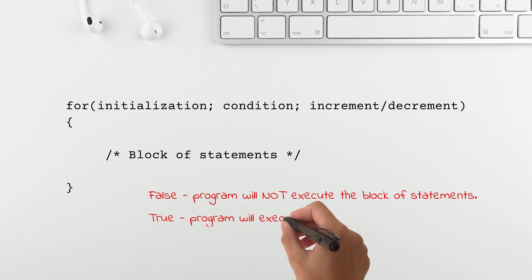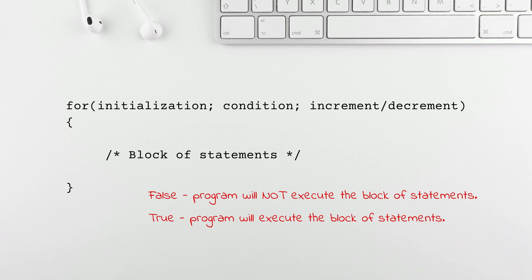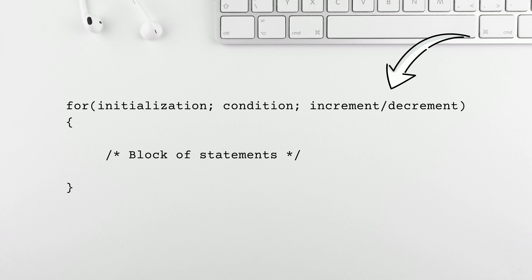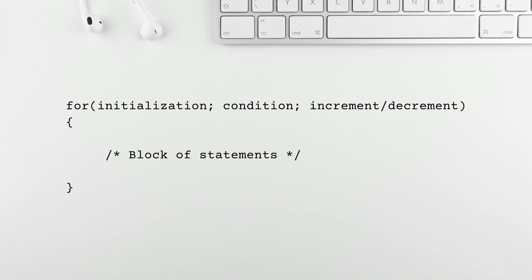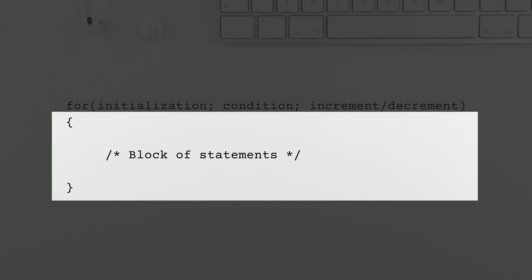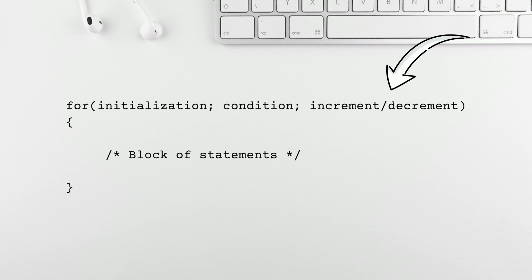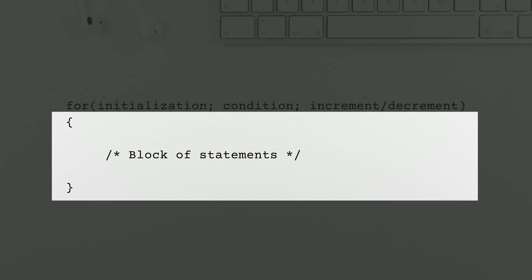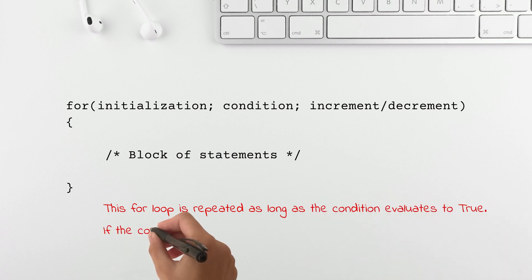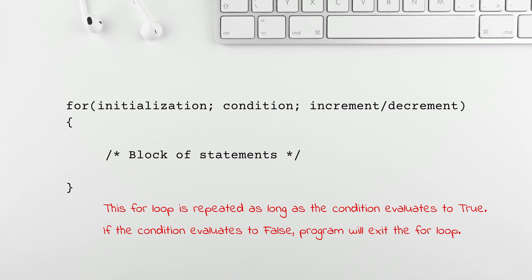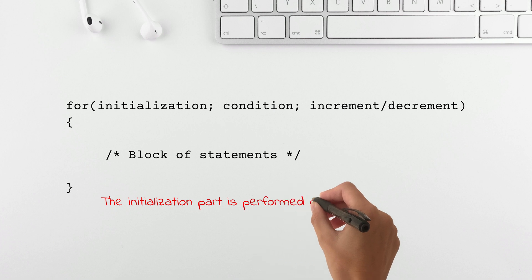If the condition evaluates to true, the block of statements enclosed within curly braces will be executed. Once done, the program will perform the increment/decrement part to increment or decrement the value of the variable initialized in the initialization part. Once that is done, the program will evaluate the condition again. If it evaluates to true, the block executes again, followed by another increment/decrement and condition check. This process is repeated as long as the condition evaluates to true. If the condition evaluates to false, the program skips the block and control is transferred to the line of code immediately after the closing curly braces. Importantly, the initialization part is performed only once.